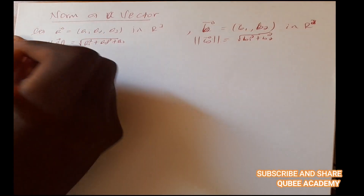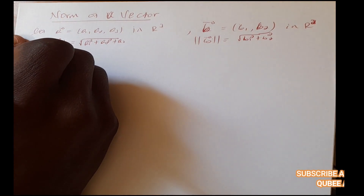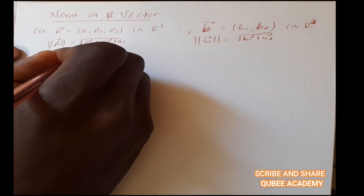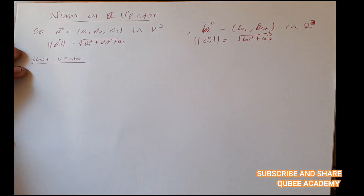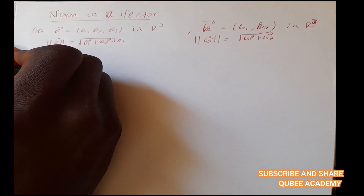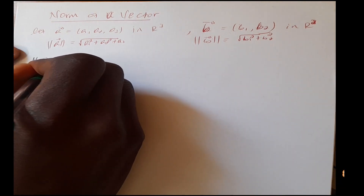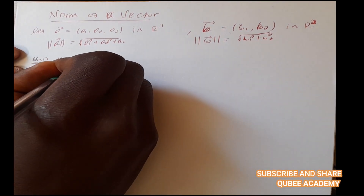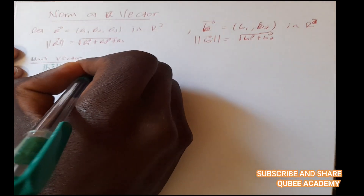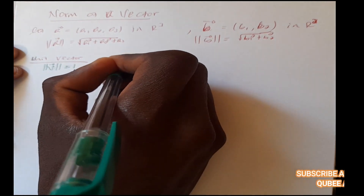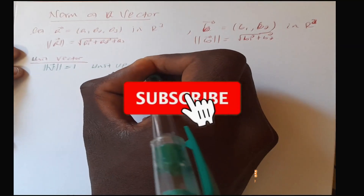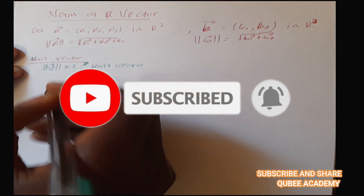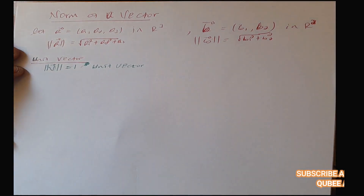Let's go to unit vector. A unit vector is a vector whose magnitude is equal to 1. For example, vector v is a unit vector if the magnitude of v equals 1.